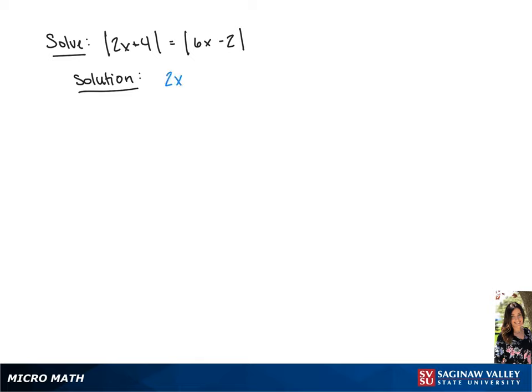We have the absolute value of 2x minus 4 equals the absolute value of 6x minus 2.